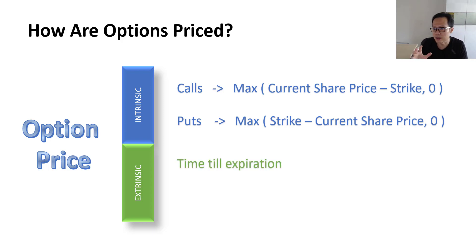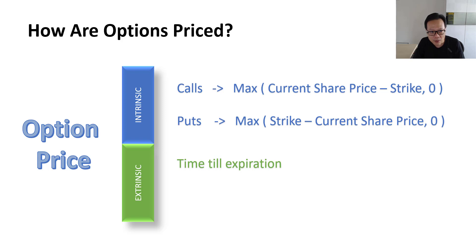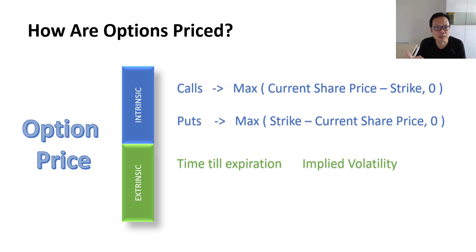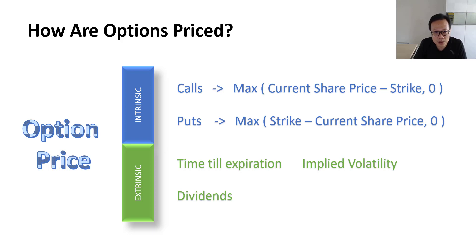Regarding extrinsic value, there are a few components. The first is time to expiration — as long as the option hasn't expired there's a chance to breach the strike price, and the longer the duration the more valuable the option. The second is implied volatility, which is a measure of the level of uncertainty in the market. If uncertainty and fear are high, people want to buy options for protection, pushing prices up. The third factor is dividends — option holders don't hold the underlying shares, so dividend distributions during the life of the option must be discounted from the price.